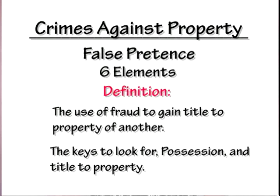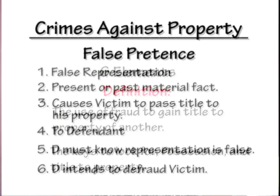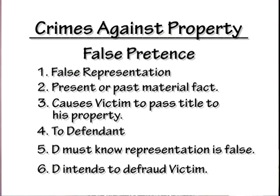False pretense has six elements and its definition is the use of fraud to gain title to the property of another. The six elements are: number one, a false representation of a present or past material fact; number two, it causes the victim to pass title to his property to the defendant; number five, the defendant knows the representation is false; and number six, the defendant intends to defraud the victim.